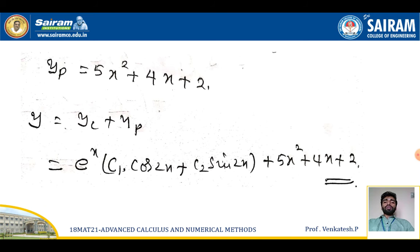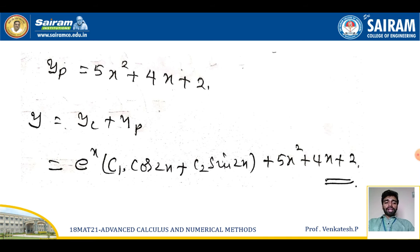The particular integral is 5x² + 4x + 2. Combining the complementary function and particular integral, the complete solution is y = e^x(c1·cos2x + c2·sin2x) + 5x² + 4x + 2.